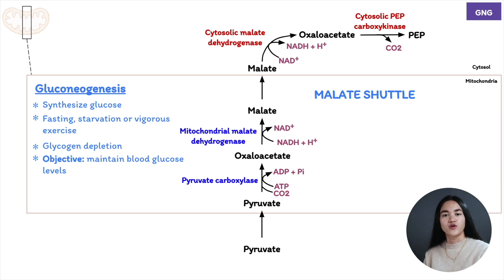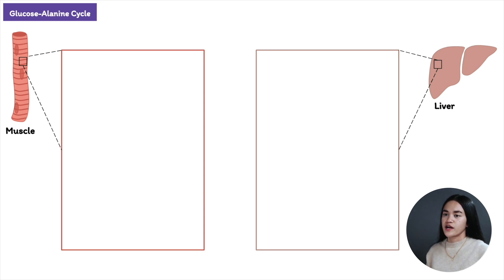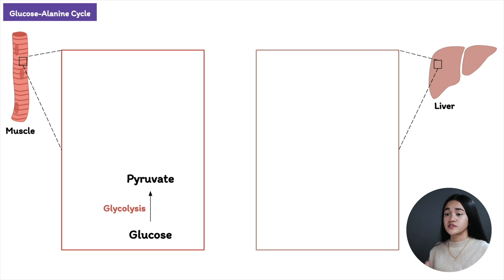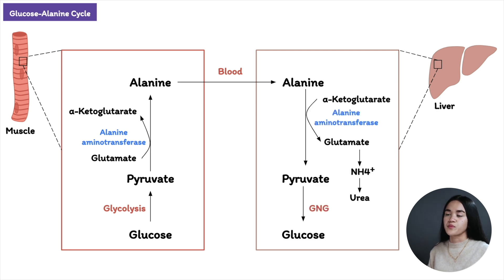Now let's look at the last pathway: the glucose-alanine cycle, which we cover in detail in the amino acid metabolism lecture. Alanine can transport amino groups to the liver via the glucose-alanine cycle. During muscle contraction, glycolysis converts glucose to pyruvate, so pyruvate levels are high in muscles. Glutamate transfers its amino groups to pyruvate, producing alanine — catalyzed by alanine aminotransferase. Alanine then travels through the blood to the liver, where in the cytosol of liver cells, the amino groups from alanine are donated to alpha-ketoglutarate, producing pyruvate and glutamate, again catalyzed by alanine aminotransferase.